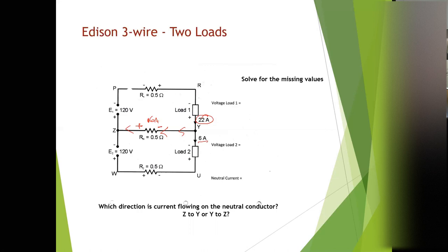And what we need to find is the volt drop. This is asking us for what is the voltage here? And what is the voltage there? And what is the neutral current? Well, we already found the neutral current. That's 16 amps.